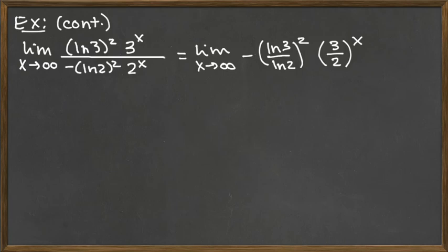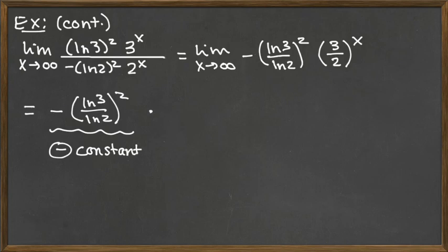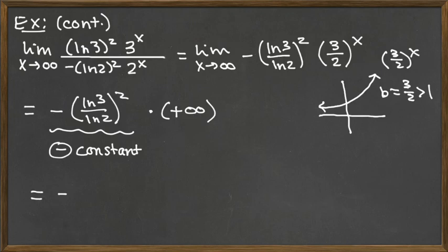What we're really looking at as we take the limit is a negative constant multiple — specifically negative natural log of 3 over natural log of 2 quantity squared, which is just a negative constant — multiplied by what happens to 3 halves to the X as X goes to infinity. Well, 3 halves to the X is an exponential growth function because 3 halves is bigger than 1, so as X goes to infinity, so does 3 halves to the X. So we're looking at a negative constant times positive infinity, and our answer is negative infinity.